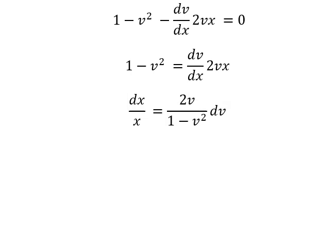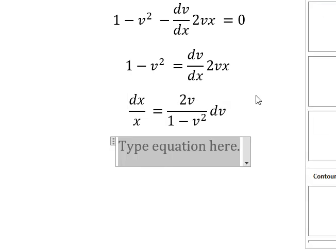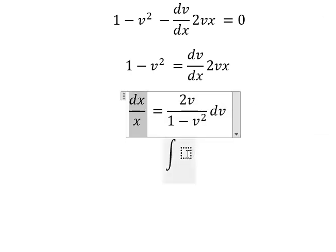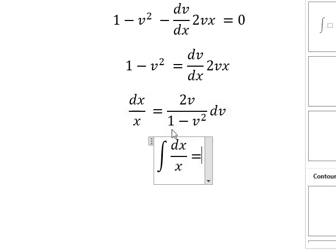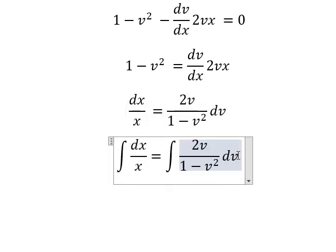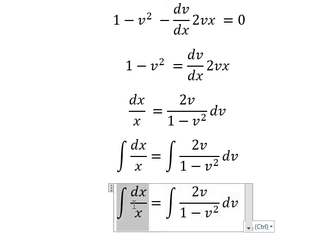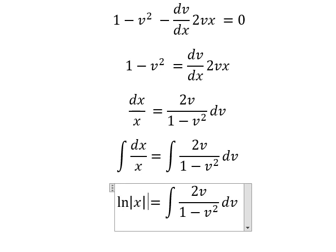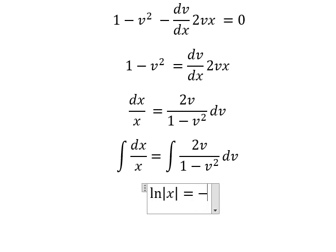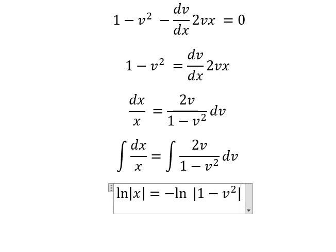Next, we put the integration for both sides. So the integration of this one, we have ln of the absolute value of x. The integration of this one, we have negative ln of the absolute value of 1 minus v square, and I will put C.